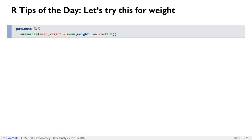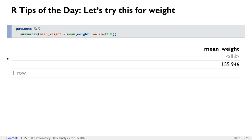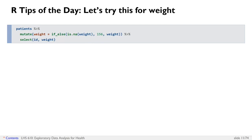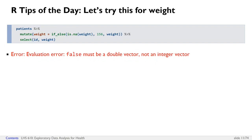What if we wanted to do the same thing for weight? First, let's calculate the mean of the weight column — we get approximately 156. Now we try: patients then mutate weight equals ifelse is.na(weight), 156, weight. Then select ID and weight. But I'll give you a heads up that this produces an error: the false condition must be a double vector, not an integer vector. This might seem cryptic, but it means that 156 and the weight column are not returning the same data type.